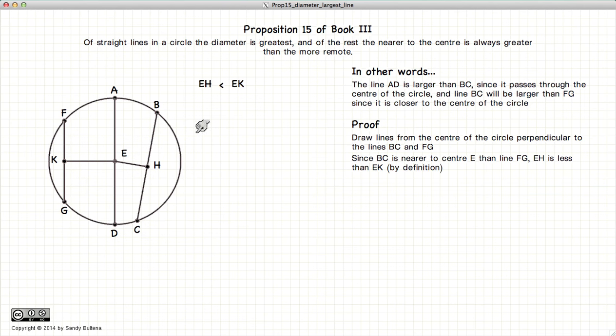Now, EH is less than EK because by definition, or because the way we've drawn this, BC is closer to the circle. So if BC is closer to the circle than FG, then EH is smaller than EK.